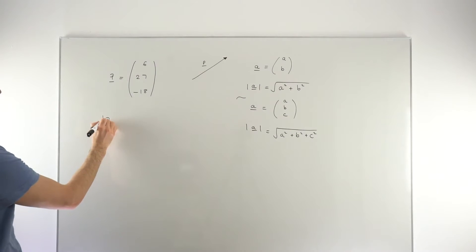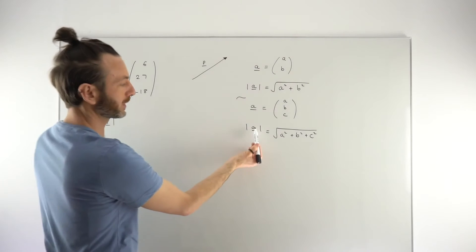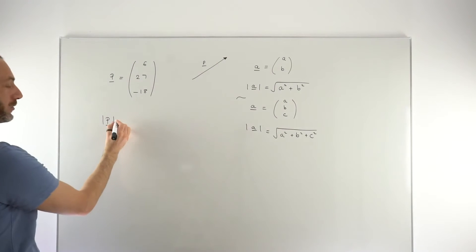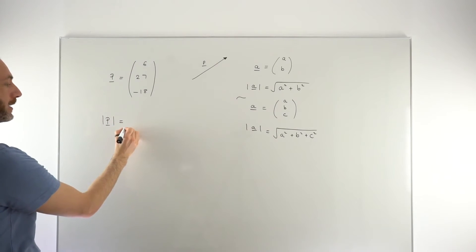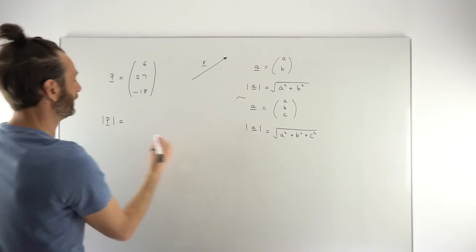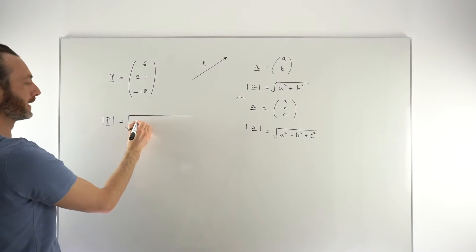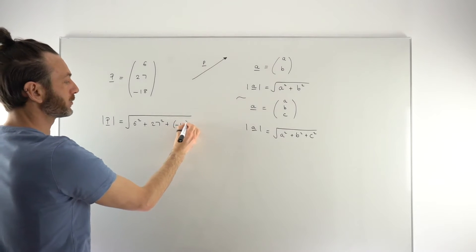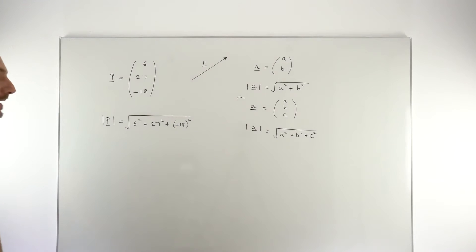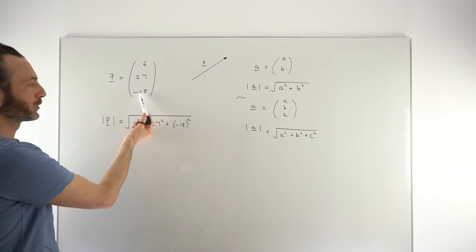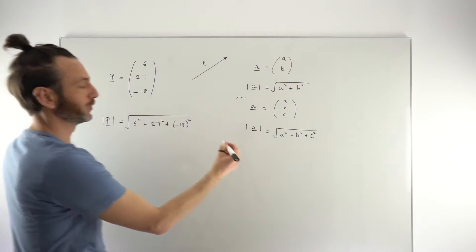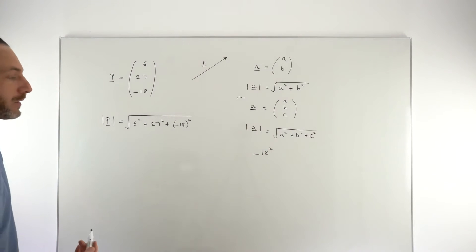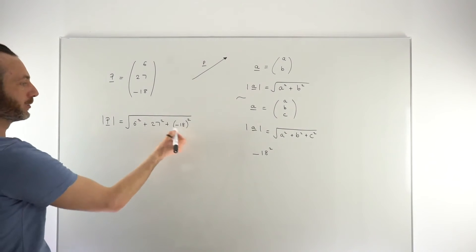We're going to find the magnitude of p. Remember, if you're writing vectors with lowercase letters you need a little line underneath — they're meant to be written in bold but since we can't, we use the underline. Setting up the formula: it's the square root of the components squared and added together. So it's √(6² + 27² + (−18)²). The negative 18 must be put in a bracket. These questions almost always include a negative component to lure students into writing −18² instead of (−18)², which would lose a mark.